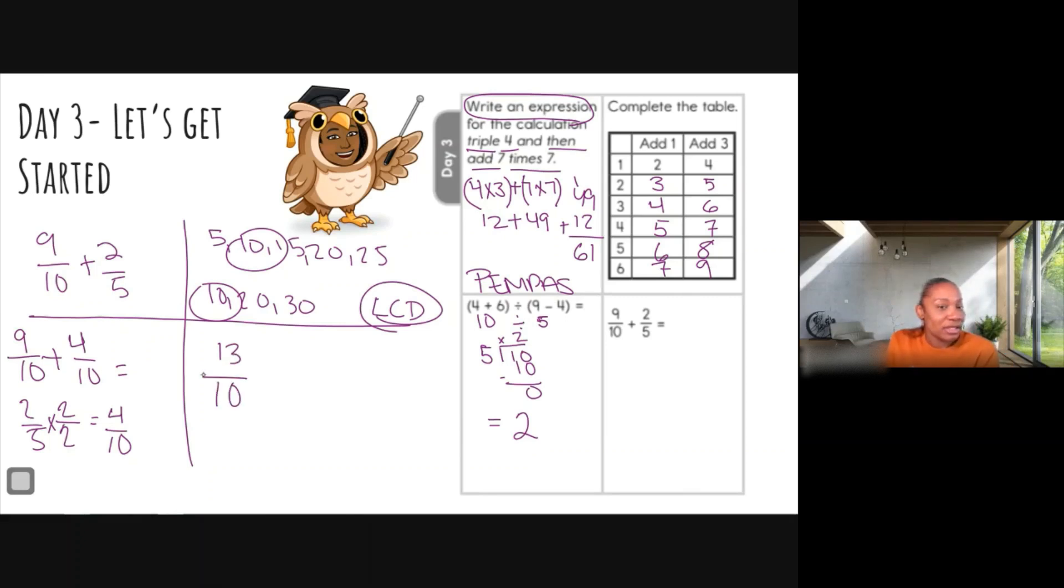What type of fraction is this when the numerator is larger than the denominator? That is called an improper fraction. So we need to simplify that, and this is how we simplify by dividing. And I'll show you a shortcut in class because I don't want to confuse you here. So we're going to write this out: ten goes into thirteen how many times? Once.